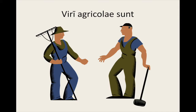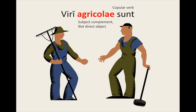Viri agricolae sunt — the men are farmers. Remember, 'vir' is a second declension noun and 'agricola' is a first declension noun, but both are masculine. Also note that 'agricolae' is plural nominative and not accusative, because 'agricolae' is a noun which describes the men's professions — it is not an object receiving the action of the verb. This is because 'to be' is a copular verb, sometimes called a copulative or linking verb. It is a verb which refers to the subject and takes a noun or adjective that refers to the subject and is not something which is being acted upon by the subject. It is also in the nominative and not the accusative as a direct object would be. Other verbs which function the same way are 'to appear', 'to become', and 'to seem', but there are many more.